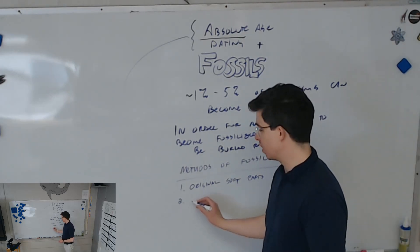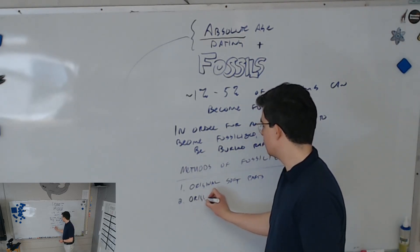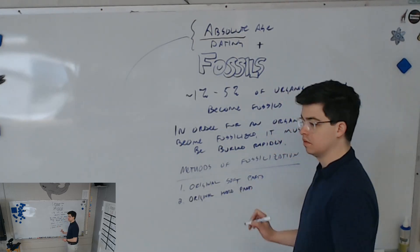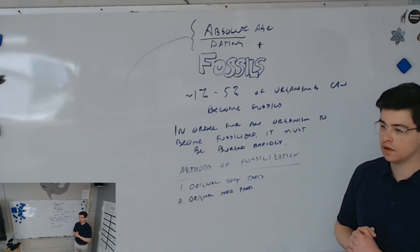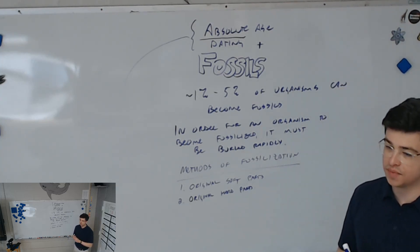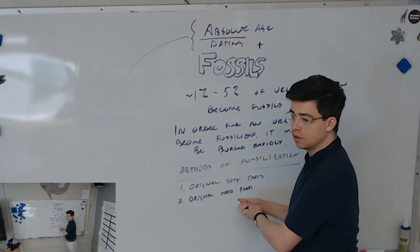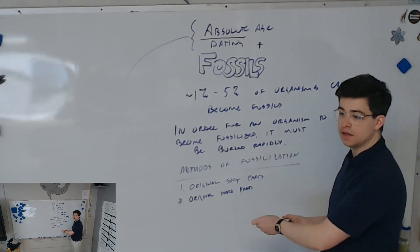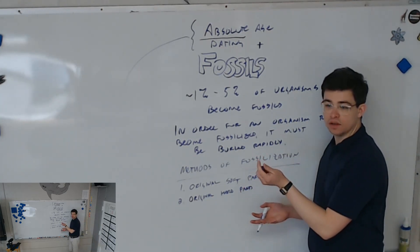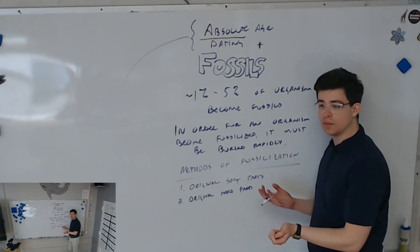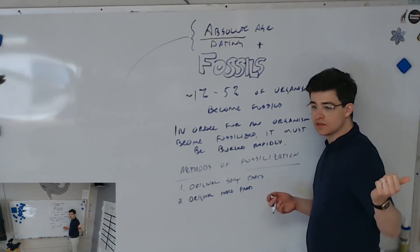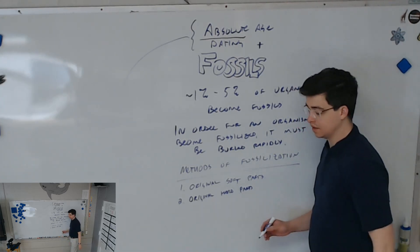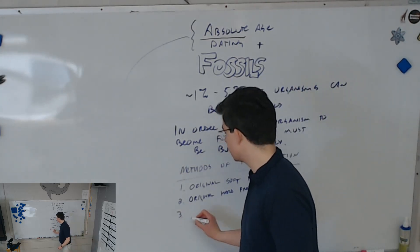The other way, and this is much more common, is original hard parts. Bones, teeth, claws, beaks. This is much more common, but still both of these together are very rare. When you find a dinosaur bone, it's not actually a dinosaur bone. That's extremely rare.